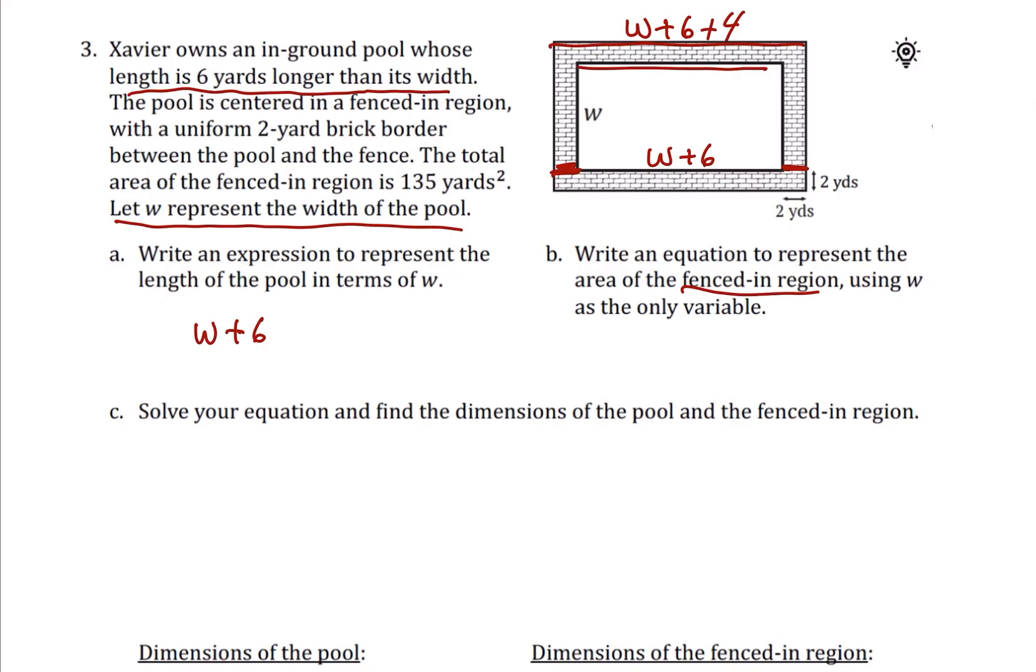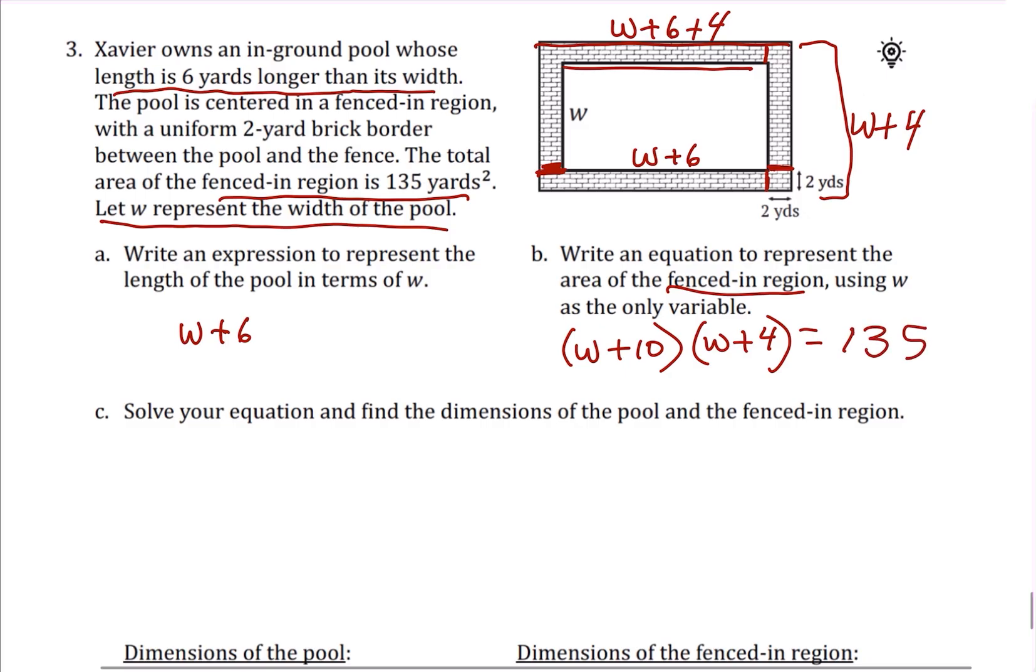By the same logic, the fenced-in area's width is going to be what was the width, W, and then we have to add in two yards up here and two yards down here. So it's going to be W plus four. So the length of the fenced-in area is going to be W plus six plus four, and I'm going to simplify it to W plus 10. So this is the length and the width of the fenced-in area, not of the pool. Length times width gives us area, and we know that the area of the fenced-in region is 135. So here's our equation.